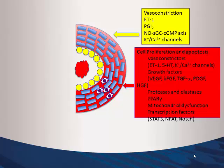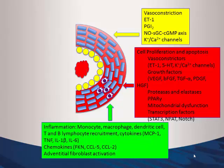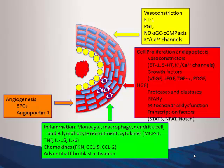There is significant cell proliferation and apoptosis with vasoconstrictors. Growth factors have been heavily implicated. You need to have an idea what things could be implicated in the development of pulmonary hypertension. Proteases, elastases, PPAR-gamma, mitochondrial dysfunction, and transcription factors play roles — particularly mutations in the background of pulmonary hypertension. Inflammation is a big field being studied: monocytes, macrophages, dendritic cells, T and B lymphocytes, and significantly elevated cytokines in these patients.